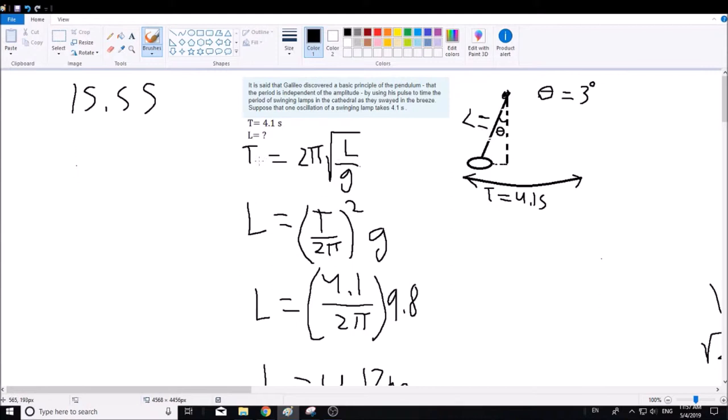Rearranging this equation, we get that the length equals the period divided by 2π squared times the gravity constant.